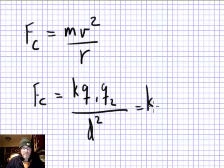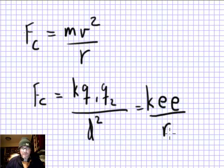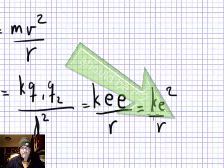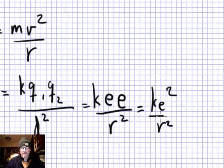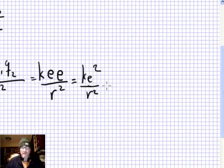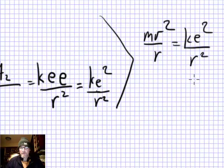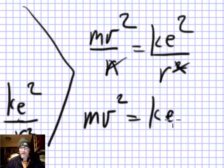Since Ke²/r² is the electrostatic force and mv²/r is the centripetal force, setting them equal gives mv²/r = Ke²/r². Canceling one r from both sides leaves mv² = Ke²/r. This result is used later. Bohr saw that only certain orbits appear possible — those with a specific angular momentum.